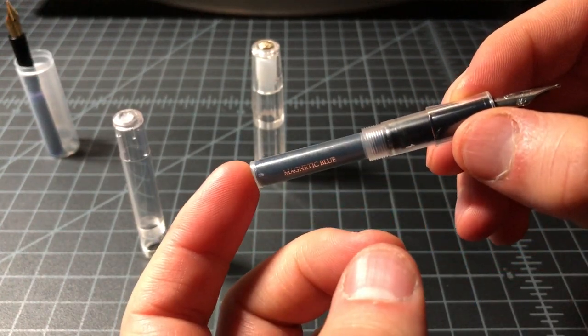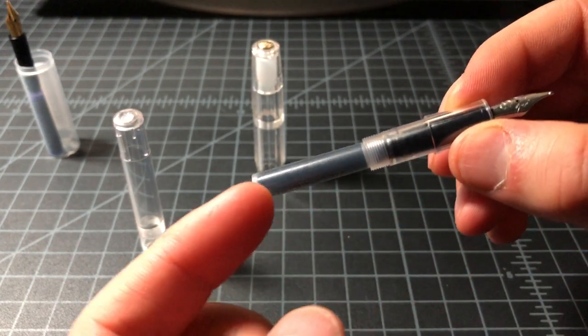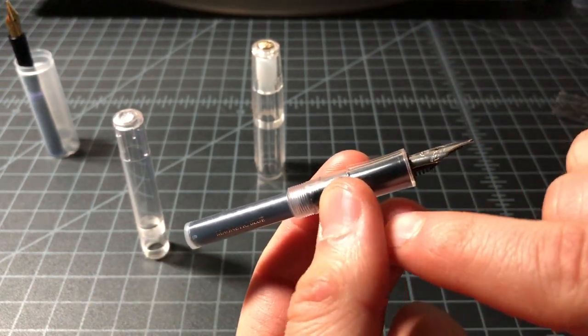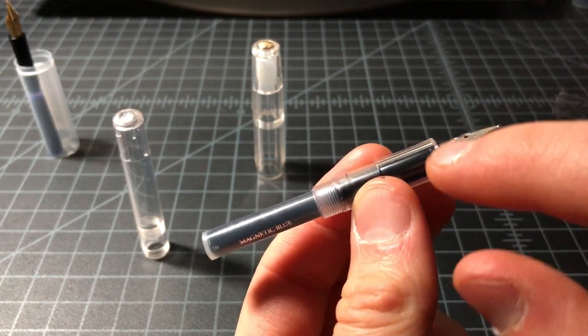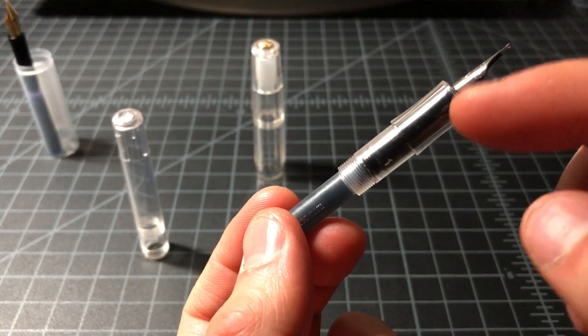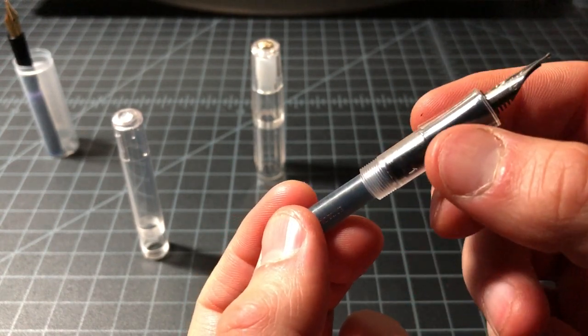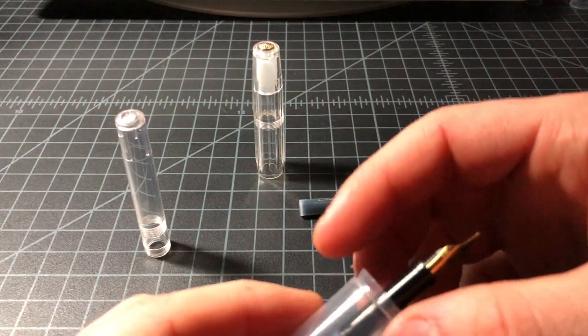Basically how it works is that the cartridge can't push through the section this way. And the nib is attached to the feed unit, which is this black part from here to here. And this cannot push through the section this way. So they marry and nothing slides around.